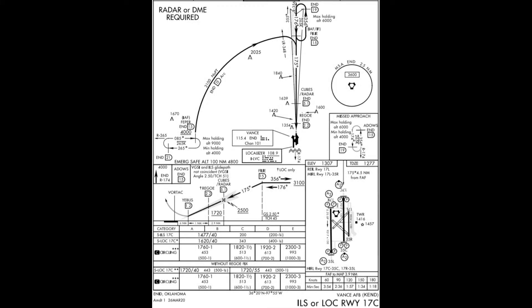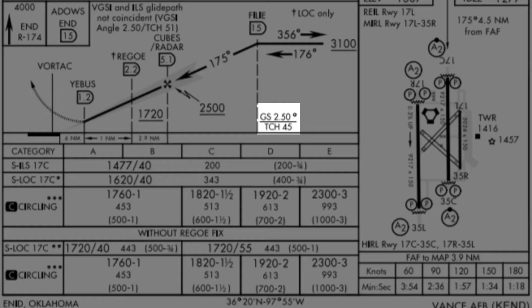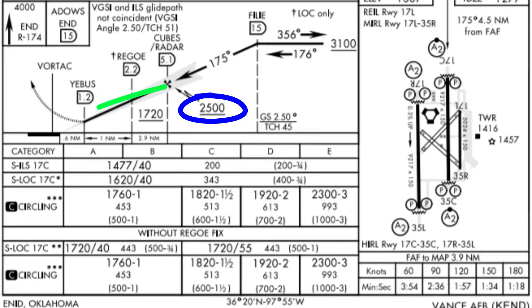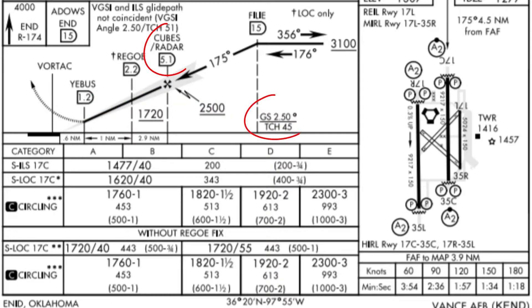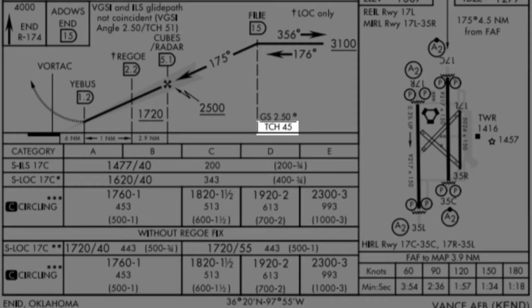Mission planning for a constant descent final approach is very simple. First, the instrument procedure needs to have a published vertical descent angle, or VDA. The VDA ensures obstacle clearance from the FAF altitude down to the runway on a specific glide slope. In other words, starting a descent from the FAF at 2,500 feet on a 2.5-degree glide slope angle will get you down to the runway at a threshold crossing height of 45 feet above the end of the runway.